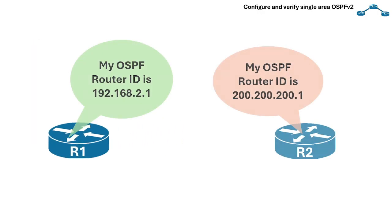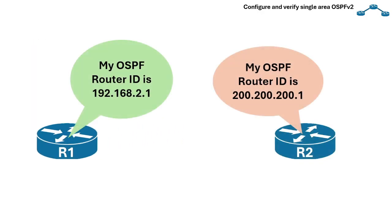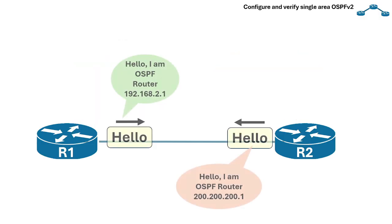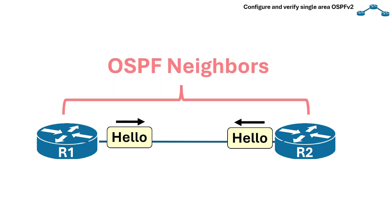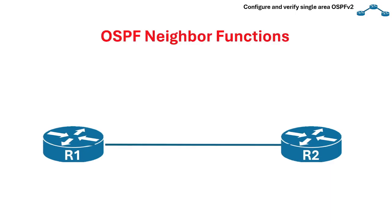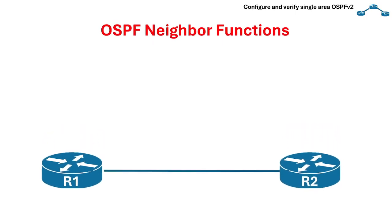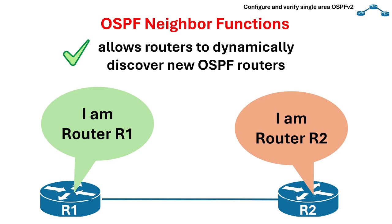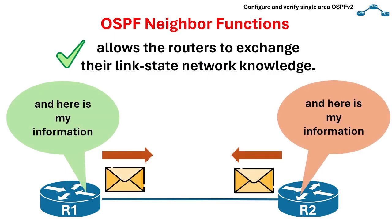Once the OSPF process on a router has successfully chosen a router ID, it starts sending hello messages on all OSPF-enabled interfaces. Once routers exchange hello messages, they become OSPF neighbors. The neighbor model has two primary functions: first, it allows routers to dynamically discover new OSPF routers on a shared segment without requiring manual configuration from a network administrator; and second, it allows the routers to exchange their link state network knowledge.